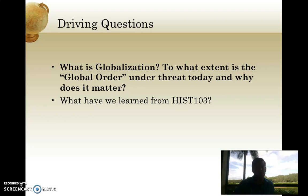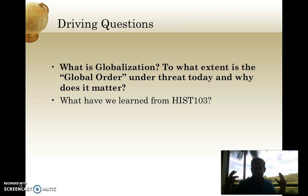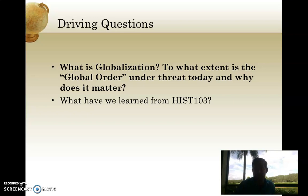Our first driving question for this week is: what is globalization, and to what extent is the global order — and I put that in quotes because it's debatable what that is — under threat today, and why does it matter? So in a lot of ways, we pick up from where we left off with your response question for week seven, where I asked you to explain how different the world was, both politically and socially, in 1945 from 1914. To give you a synopsis of the best answers: in 1914, you still had this world dominated by European colonialism. The major powers on earth were Great Britain, France, Germany, Russia, and to a lesser extent the Austro-Hungarian Empire and the Ottoman Empire. But you had these new upstart powers too — the United States and Japan in particular — and the Europeans had stretched their influence across the entire world: Africa, Southeast Asia, the South Pacific.